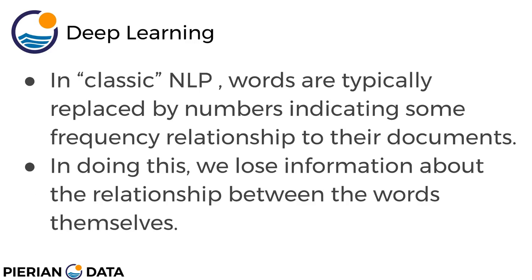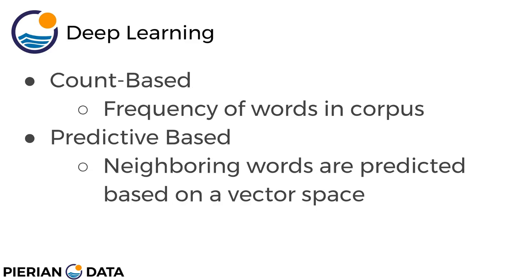In classic natural language processing, words are typically replaced by numbers and it indicates some sort of frequency relationship to their documents. In doing this approach, we end up losing information about the relationship between the words themselves. Natural language processing has two approaches: a count-based approach or a predictive-based approach. Count-based methods compute statistics of how often some words co-occur with neighbor words in a large text corpus, and then map these count statistics down to a small dense vector for each word, essentially replacing the words with numbers.